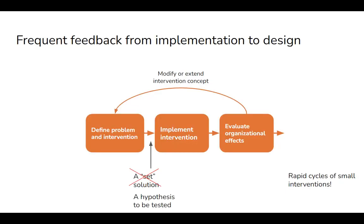So those were three features of such processes: sociotechnical scope; a certain way of dealing with wicked problems through framing; and organizational agility — not just focusing on technical requirements but also on actual organizational effects that feed back into what we are designing. Now I want to spend a little bit of time on some issues that make this very difficult to do in real projects.